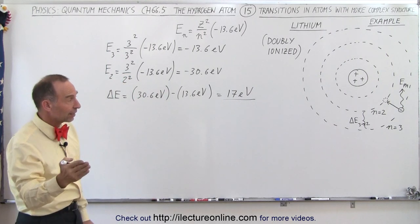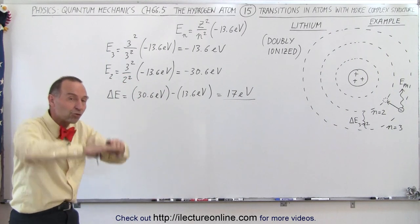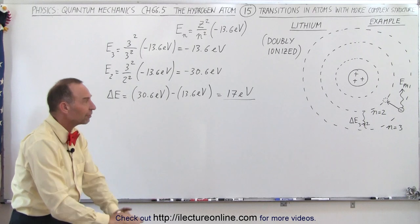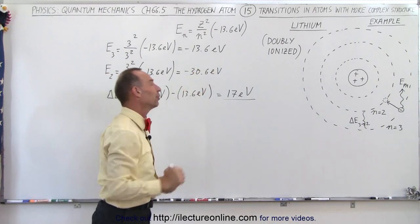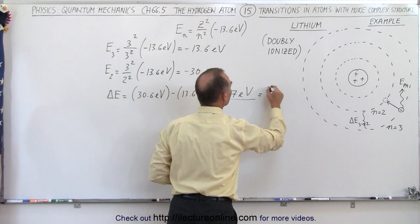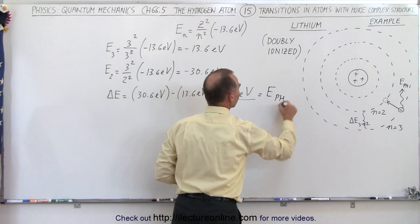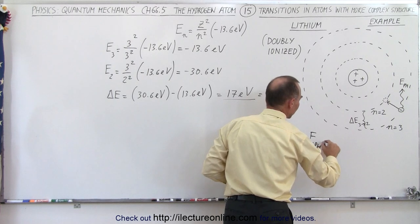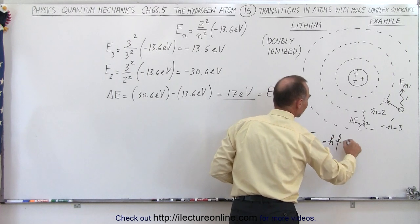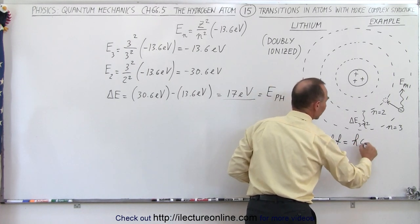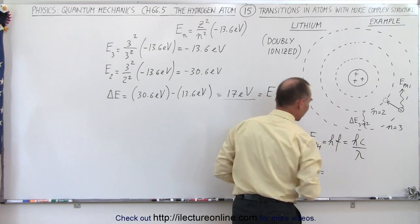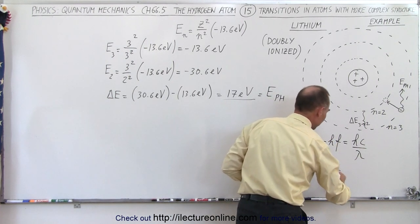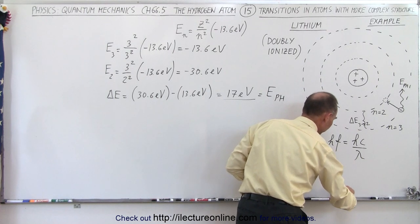Of course, since we jump from a higher level down to a lower level, the electron drops in energy level, and that difference is then given off as a photon, and so we also know that this is equal to the energy of the photon. And since the energy of a photon is equal to Planck's constant times the frequency, which is equal to hc over lambda, we can see that the wavelength of that photon is going to be equal to hc divided by the energy of the photon.